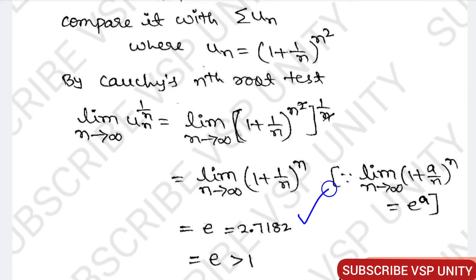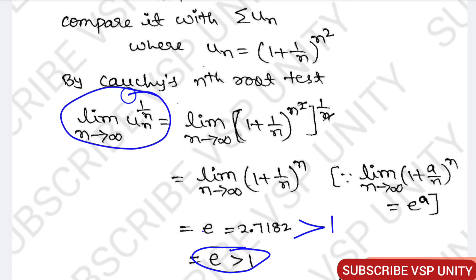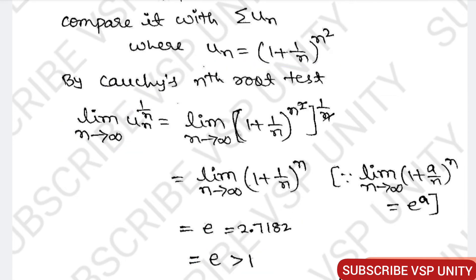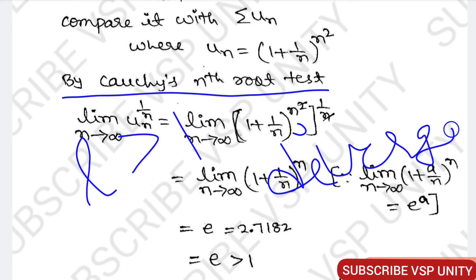The value of e we already know is 2.7182. So this l is greater than 1 — since e is greater than 1, the total value is greater than 1. According to Cauchy's root test, if l is greater than 1, we can say that the given series is divergent.